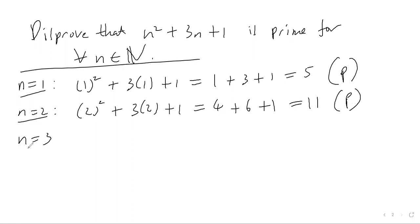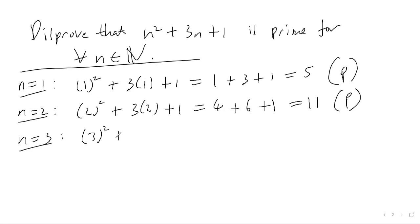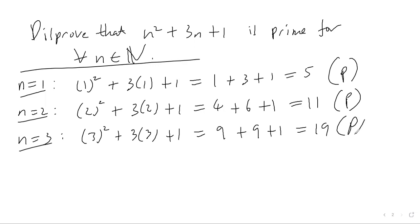We want to come up with an example of n such that we get a non-prime number — once we've done that, we've disproved the statement. Let's try n = 3: 3² + 3×3 + 1 = 9 + 9 + 1 = 19. Again, it's prime.